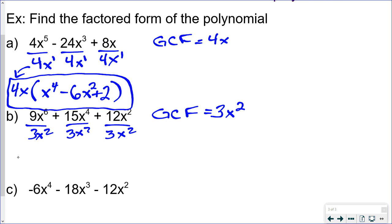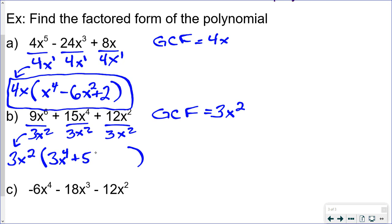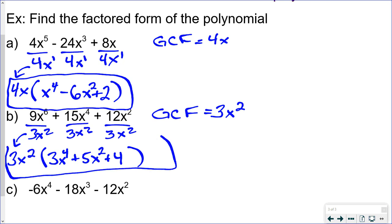So we divide each term by 3x squared. 9 divided by 3 is 3, and x to the sixth divided by x squared is x to the fourth — subtract the exponents. 15 divided by 3 is 5, and x to the fourth divided by x squared is x squared. 12 divided by 3 is 4, and x squared divided by x squared is just 1. So the factored answer is 3x squared times the quantity (3x⁴ minus 5x² plus 4).